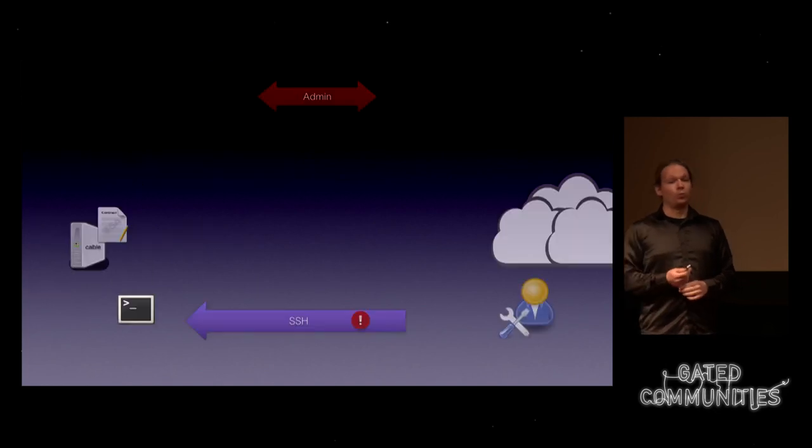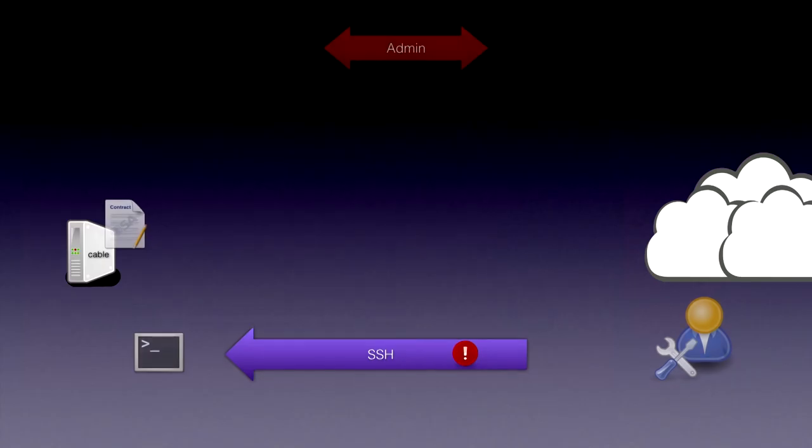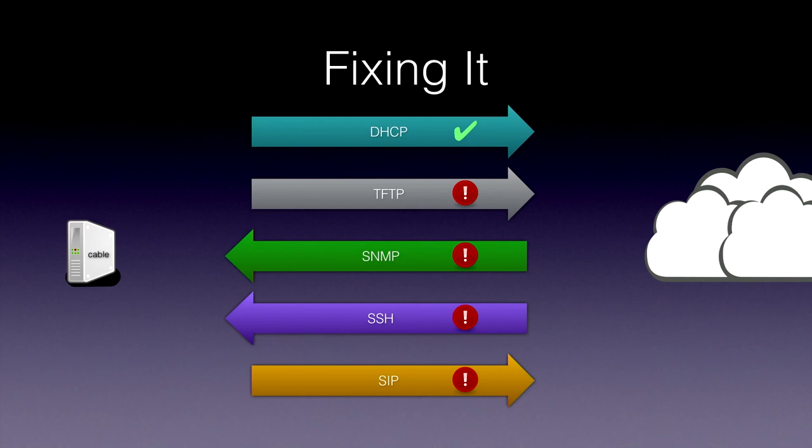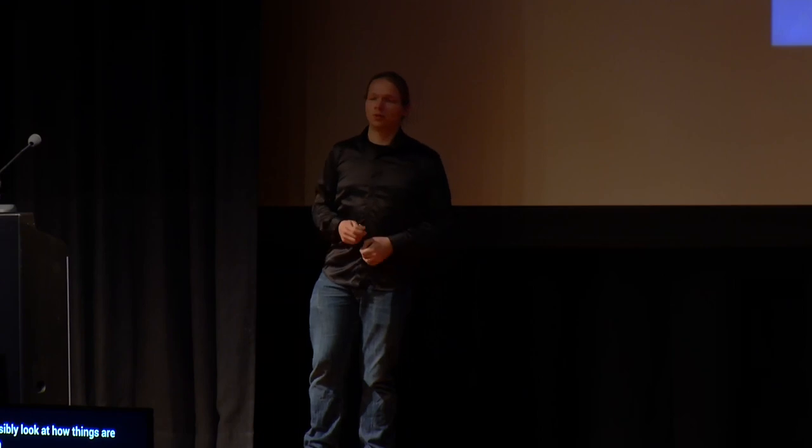So what happened next? We had this whole huge mess with lots of services that are all available, all attackable, and everything is just horribly broken. That was two months ago. There were some circumstances why we just couldn't tell them earlier, and we basically told them: in two months' time we're going to do a talk here and everything's going to be public, so you might want to fix your network until then.